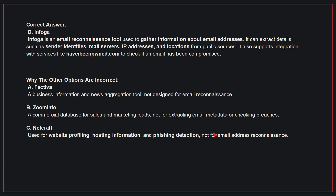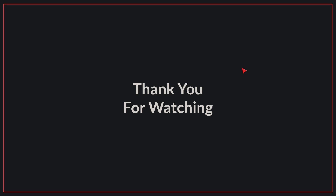Why the other options are incorrect: A, Factiva — this is a business information and news aggregation tool, not designed for email reconnaissance. B, ZoomInfo — this is a commercial database for sales and marketing leads, not for extracting email metadata or tracking breaches. C, Netcraft — this is used for website profiling, hosting information, and phishing detection, not for email address reconnaissance. Therefore, the correct answer is D. We have come to the end of today's video. If you liked the video, please make sure to like and subscribe. Goodbye.